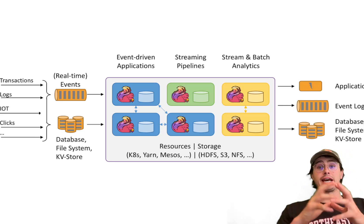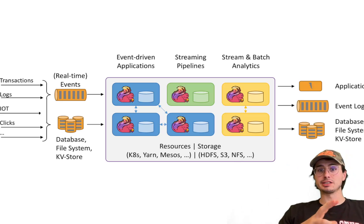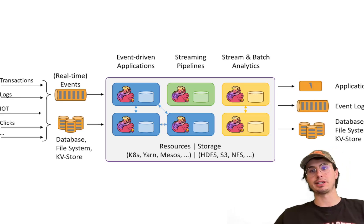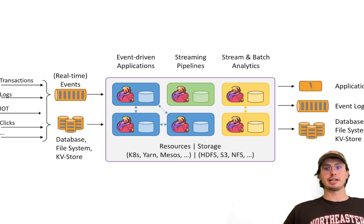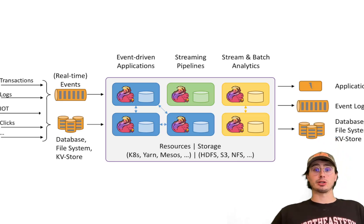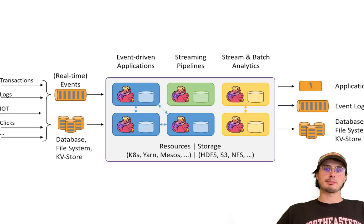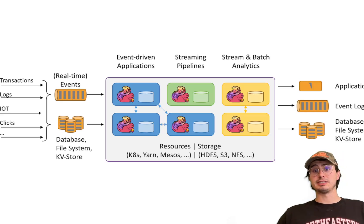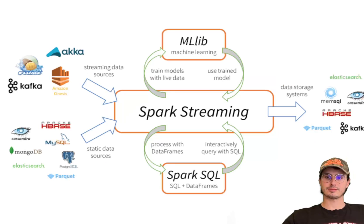Apache Flink is designed as a stream processing platform — strictly streaming — with a strong emphasis on stateful and event-time processing. Flink's architecture centers around a Job Manager that coordinates the execution of data streams and Task Managers that perform the actual computation. The Job Manager oversees resource allocation, fault tolerance, and checkpointing. Task Managers break down tasks into smaller parallel operators for efficient scaling. Flink distinguishes itself through advanced state management, exactly-once processing semantics, and native support for event-time processing — essential for handling data that arrives late or out of order.